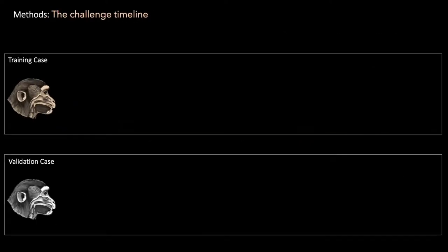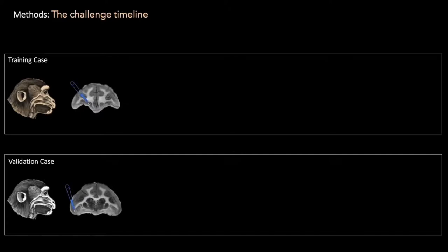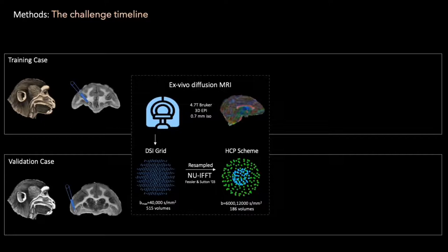For this challenge we had data from two monkey brains that served as a training and a validation case. For both of these we had in vivo tracing data from two different injection sites in the anterior frontal cortex and ventrolateral prefrontal cortex respectively. We also had ex vivo diffusion MRI acquired at 0.7 mm isotropic resolution that we distributed both in the acquired DSI version and in the resampled HCP version for which we used the two shells of the lifespan HCP studies adjusted to achieve the same diffusion contrast in a fixed brain.